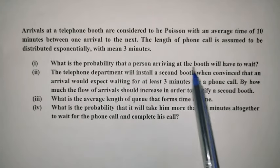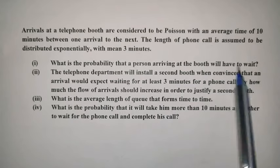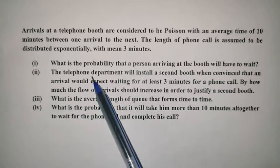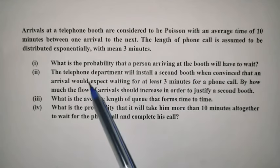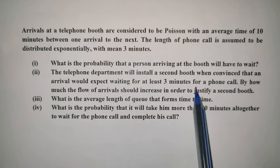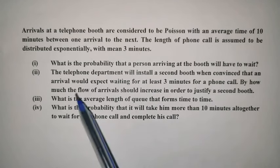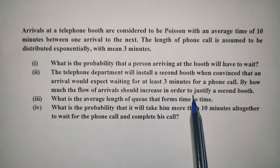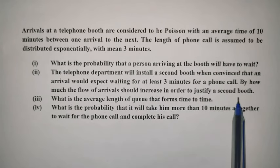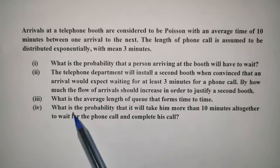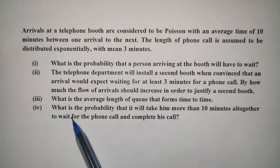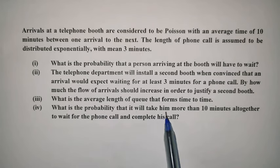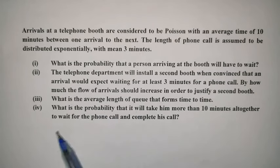There are four questions to answer. First, what is the probability that a person arriving at the booth will have to wait? Second, the telephone department will install a second booth when an arrival would expect to wait at least three minutes — by how much should the flow of arrivals increase to justify a second booth? Third, what is the average length of the queue that forms from time to time? Fourth, what is the probability that it will take more than 10 minutes altogether to wait and complete the call?